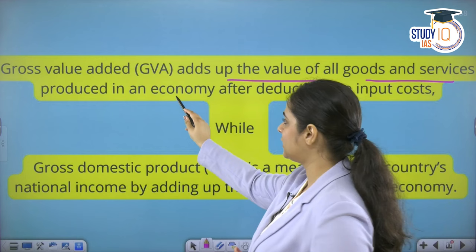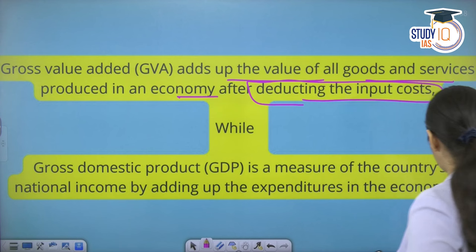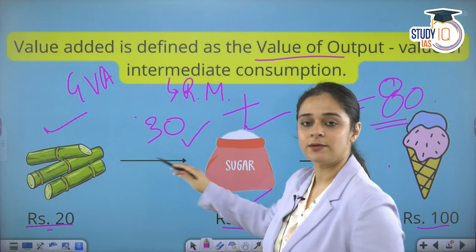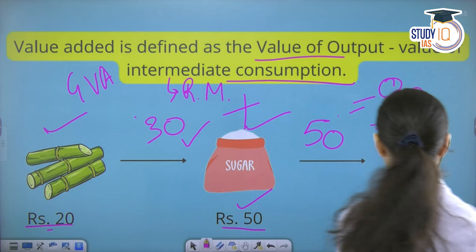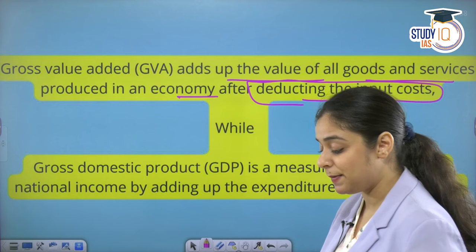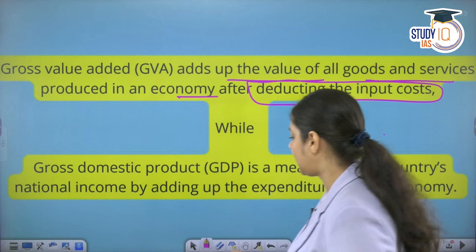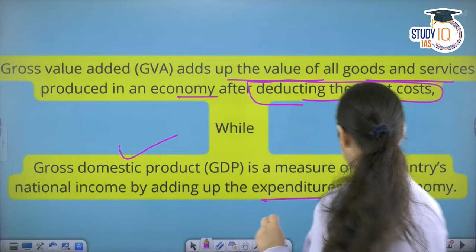Gross Value Added adds up the value of all goods and services produced in an economy after deducting the input cost — that is, raw material costs and intermediate consumption costs. GDP, on the other hand, is calculated by combining all the expenditures on goods and services produced in the economy to arrive at the Gross Domestic Product.